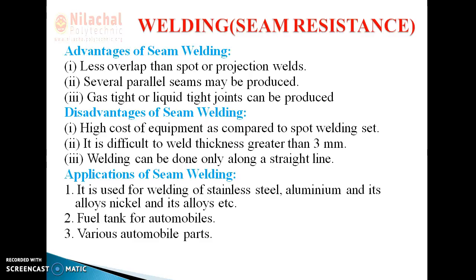Going through the review: in seam welding, the electrodes we are using are circular in nature. These circular electrodes are used for the seam welding process. These are the advantages and disadvantages of seam welding. In the seam welding process, because we use a circular type electrode, the production rate is very high.